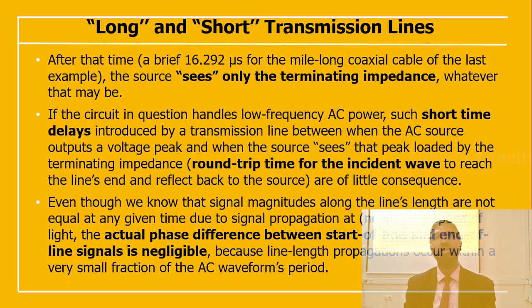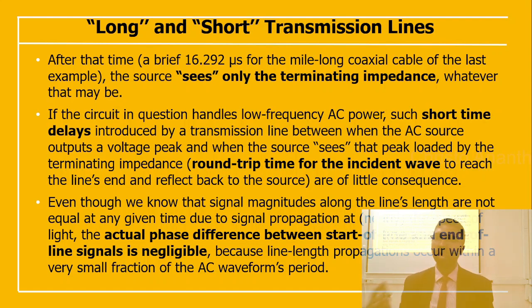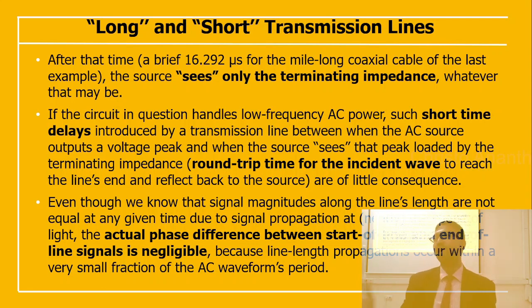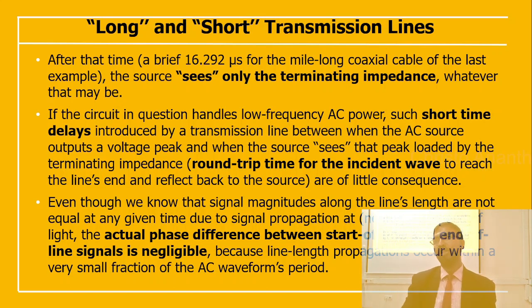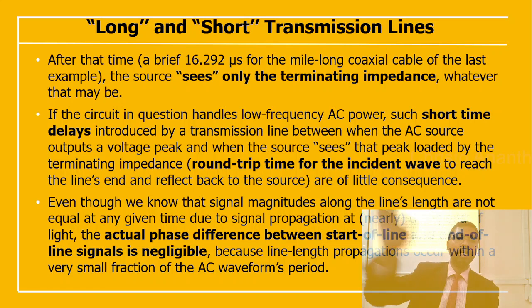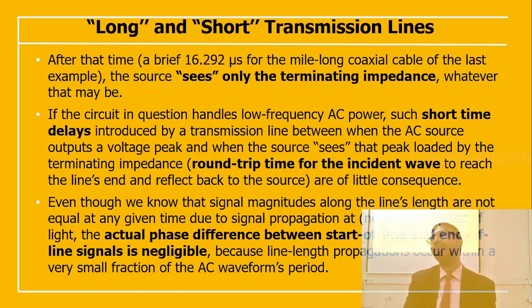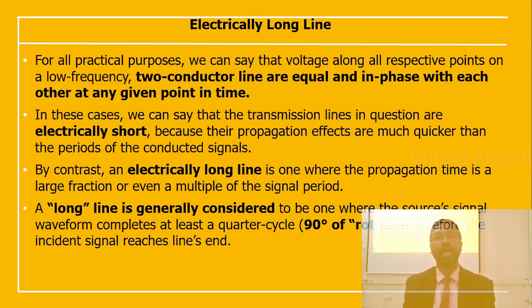After that time — about 16.292 microseconds for a mile-long coaxial cable — the source sees only the terminating impedance. For circuits handling low-frequency AC power, the short time delay introduced by the transmission line has little consequence. Even though signal magnitudes along the line are not equal at any given time due to signal propagation at the speed of light, the actual phase difference between the start and end of the line is negligible because propagation occurs within a very small fraction of the AC waveform period.